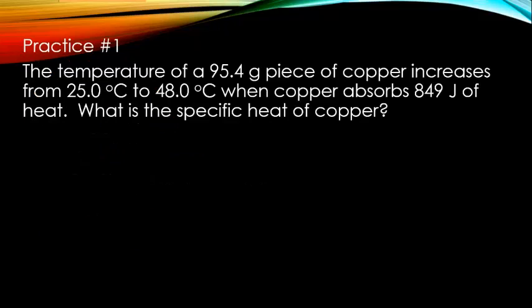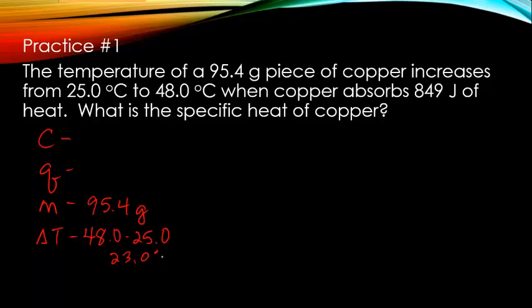So let's practice. We're going to do two of these together, and then one of them you're going to be doing on your own. So if we're reading through the equation, we're trying to find all of our objects to go into a specific heat equation. We have specific heat. We have heat, which is Q, M for mass, and then we have our change in temperature. We have 95.4 grams, so we know that's going to be our mass. And then it says that the temperature increases from 25, so initially it was at 25, and 48 is our final. So if we're doing final minus initial, we have 48 minus 25. And so we're looking at 23.0 degrees Celsius for our change in temperature. And it tells us in the problem that it absorbs 849 joules of heat, so we know Q.